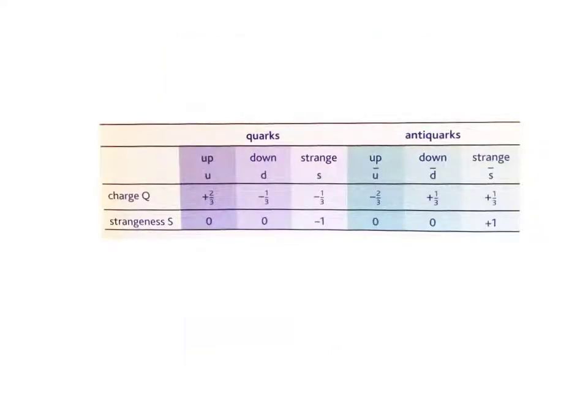The quarks that make up the proton and neutron are up, down, and strange, and the anti-quarks are anti-up, anti-down and anti-strange. The corresponding charges are here and the strangeness number is here and also only the strange quark has a strange number.